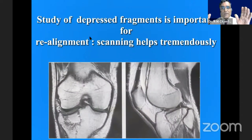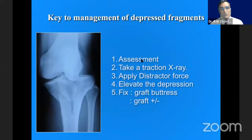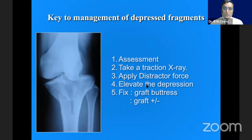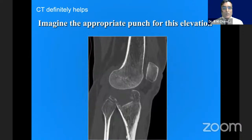Study of the depressed fragment is important for realignment, and CT scanning helps tremendously. The key to management of the depressed fragment is proper assessment. Take a traction view on C-arm — AP and lateral — then apply distractor force, elevate the depression, and fix those fragments with rafting screws or other means, then buttress and graft, or use graft substitutes, or even without graft depending on the situation.